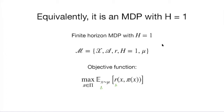A student asks: why is H equal to 1 if there are multiple rounds? In the next round, the new context is sampled from mu again — there's no Markov transition. In RL, every episode you make H decisions and reset to the initial state. Here we just make one decision per day. On the next day a new context arrives, also IID sampled from this distribution.